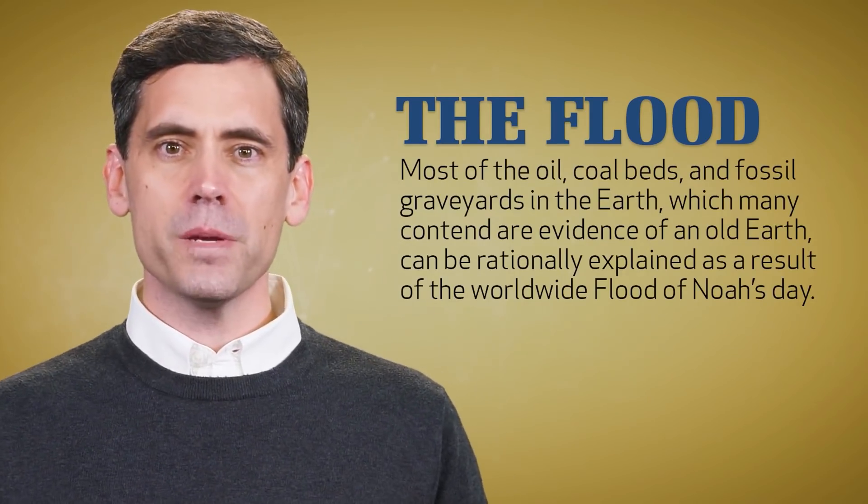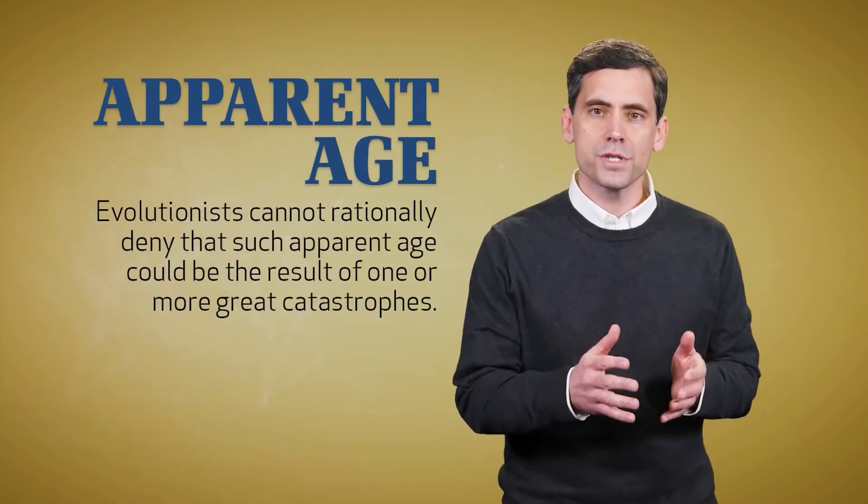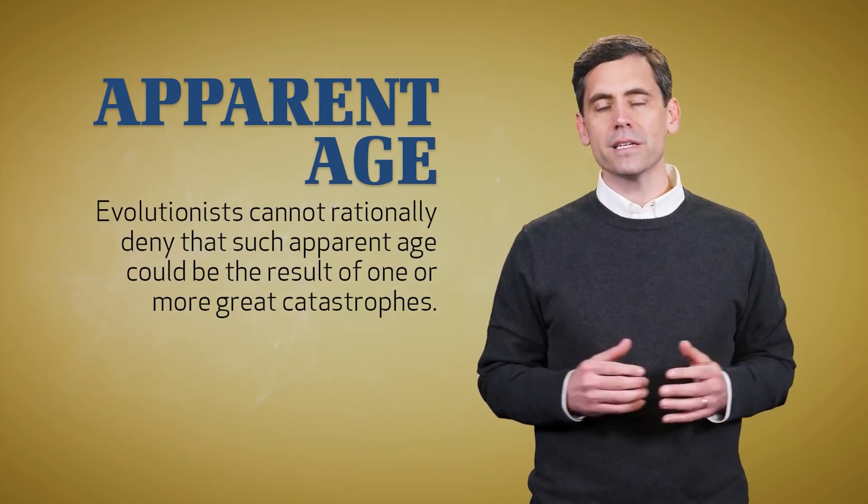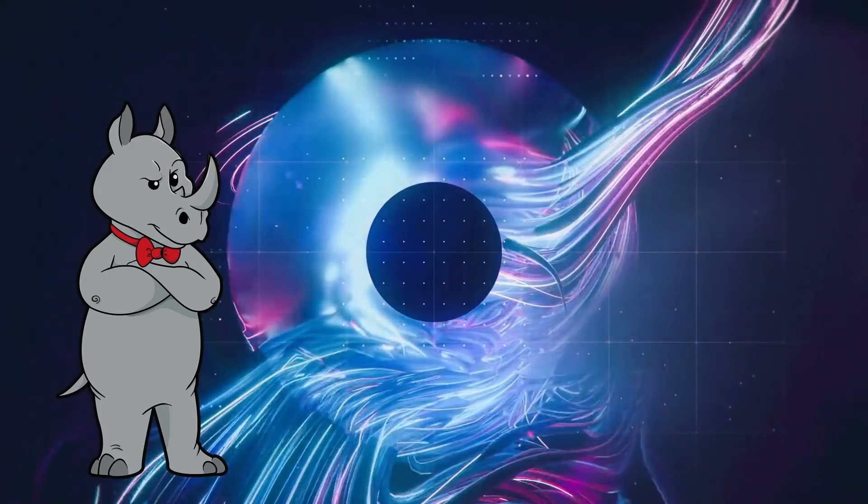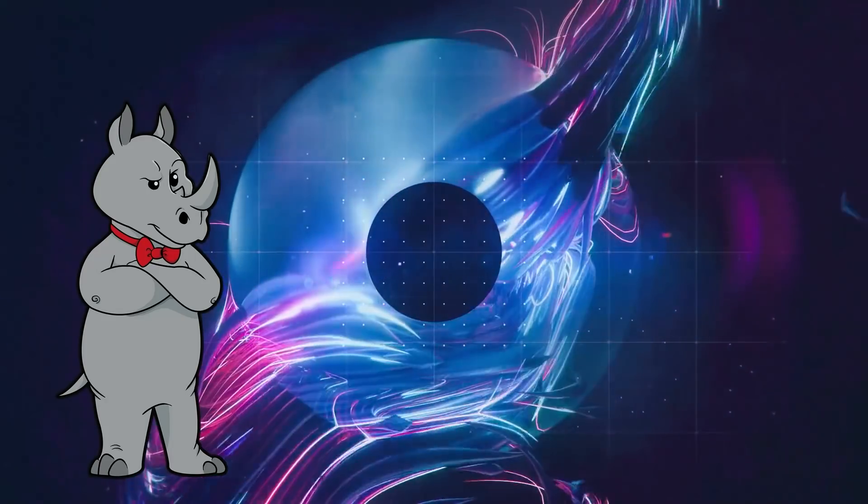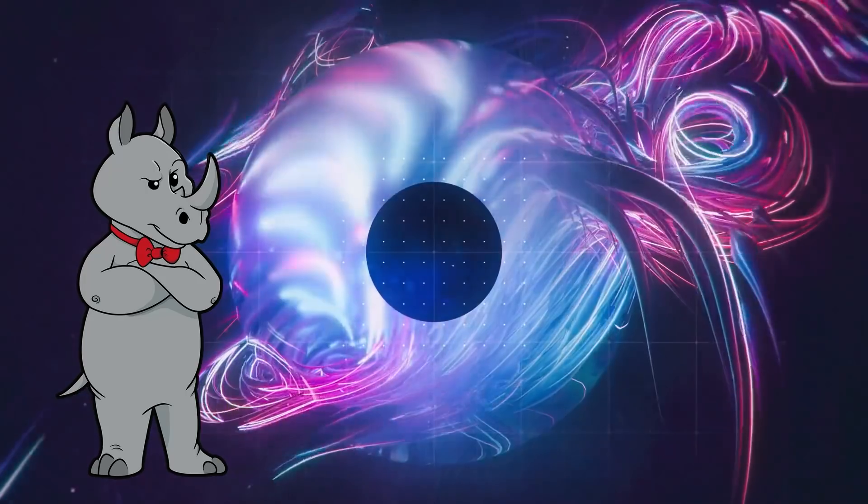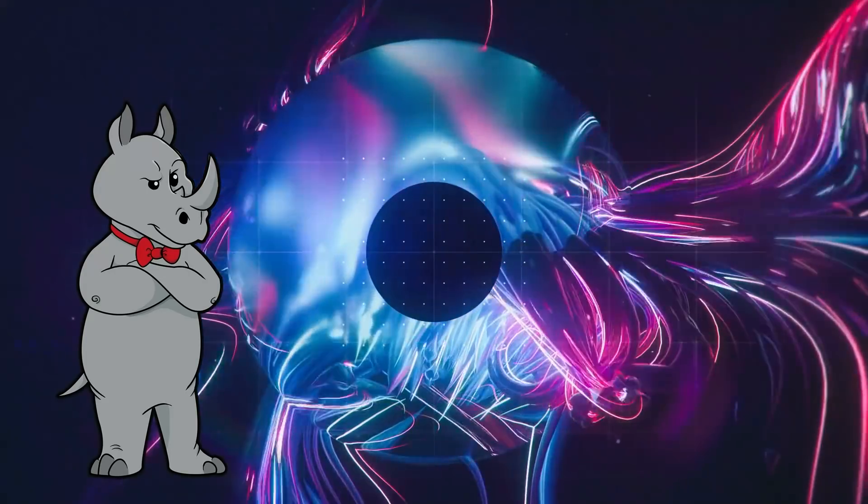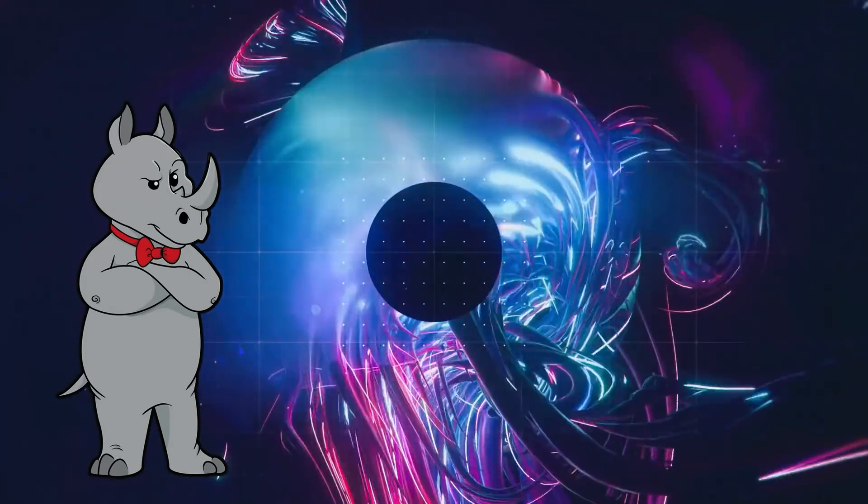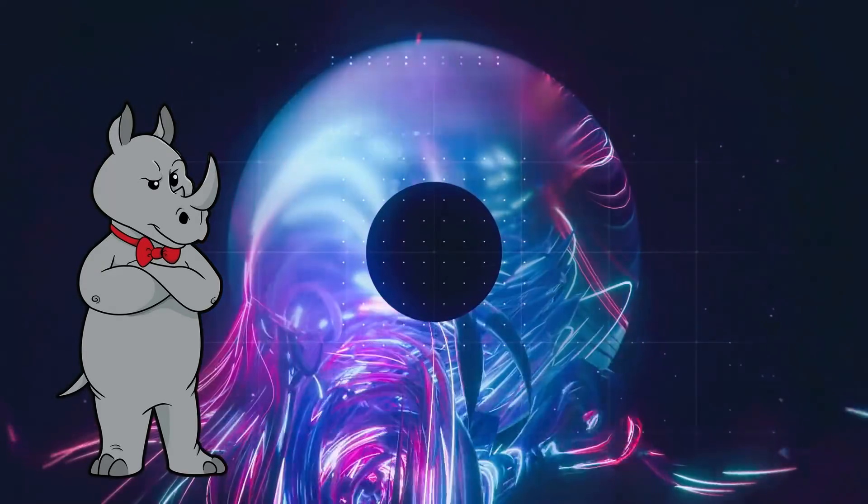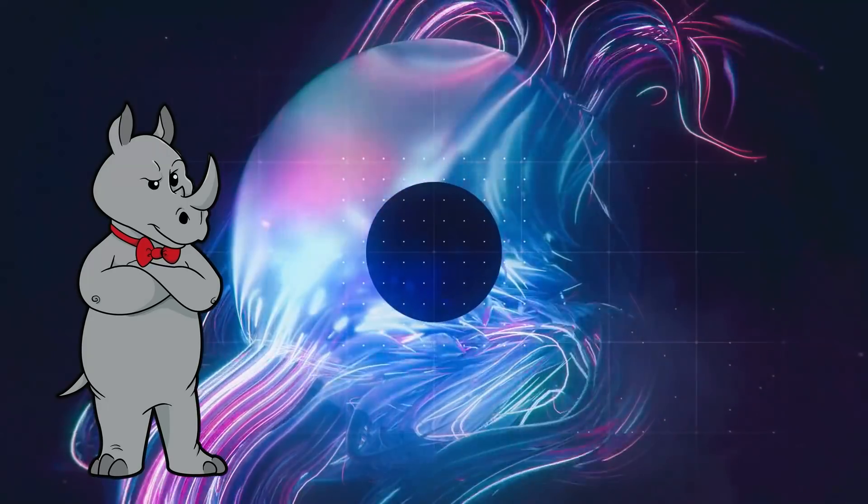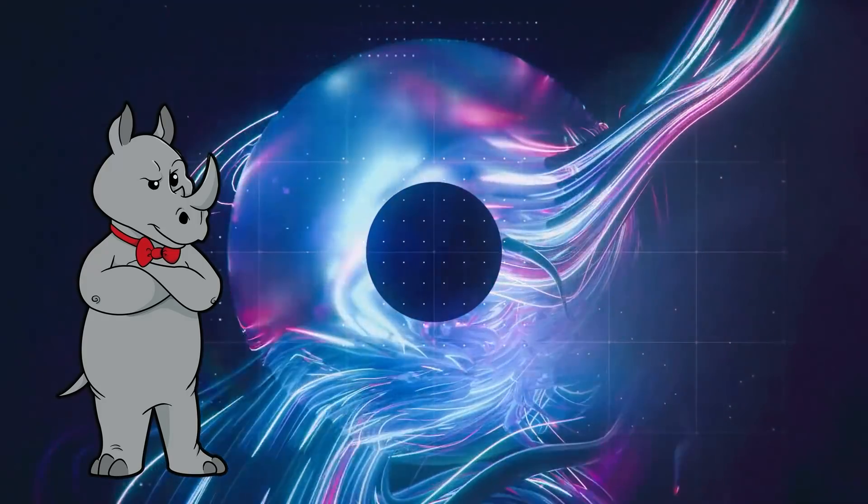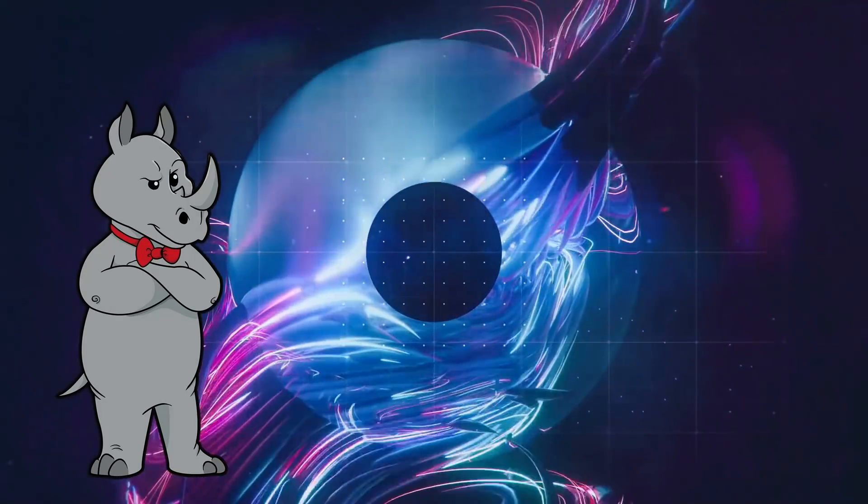In short, even if it could be proven that the Earth looks very old, evolutionists cannot rationally deny that such apparent age could be the result of one or more great catastrophes. Yes, we can. All of the supposed evidence for these great catastrophes have adequate naturalistic explanations if the Earth is old. But they require severe misrepresentation in order to look like maybe it could have been magic. So, yes, we can rationally deny the flood model as the explanation for the Earth's apparent age. Will he find some evidence that doesn't rely on misrepresentation in order to make it look like it could have been magic if you look at it sideways? To find out, tune in tomorrow, same Rhino time, same Rhino channel.